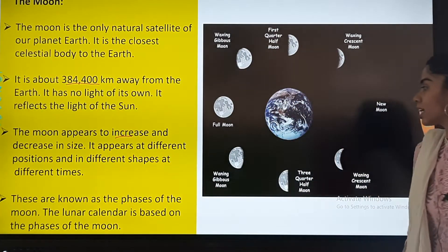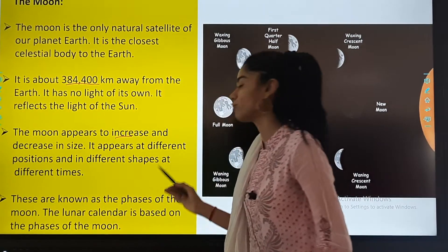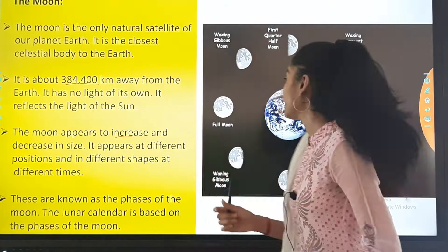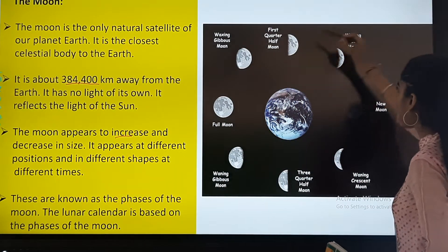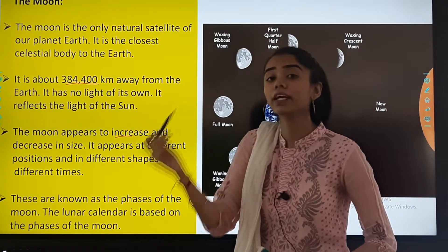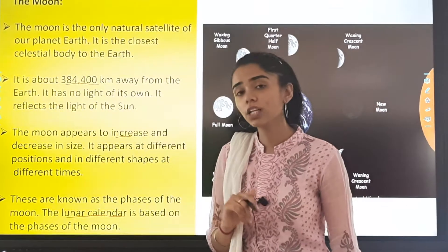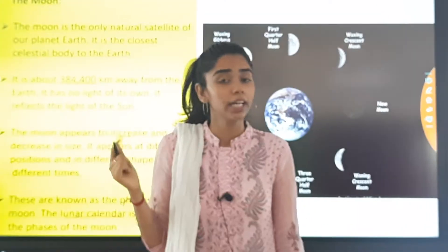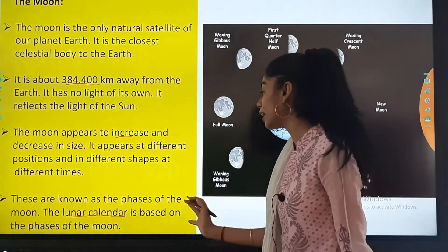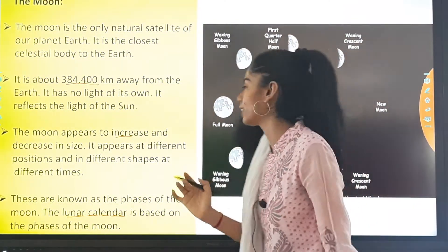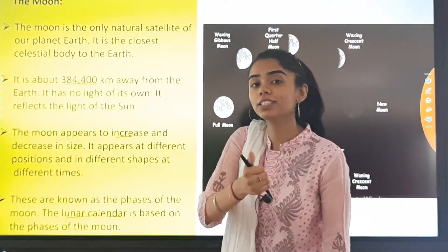These changes in the moon's appearance are known as the phases of the moon. The lunar calendar is based on the phases of the moon, unlike the regular calendar which is based on the phases of the sun.